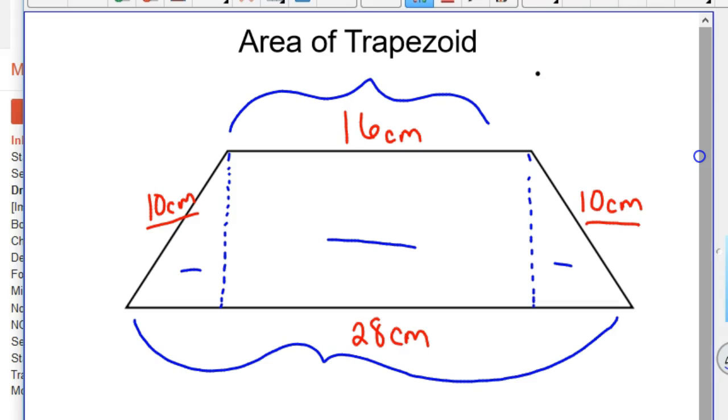So since these lengths on the edge have to be the same, right here and right here, you can just subtract the 28 minus the 16 and come up with the fact that that's 12. Well, 12 divided by 2 means this piece is 6 centimeters, and this piece is 6 centimeters. So now it's just a matter of finding these heights,